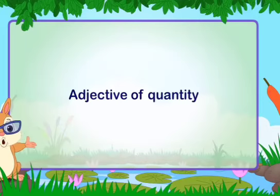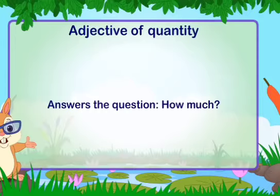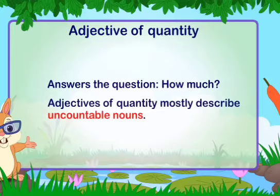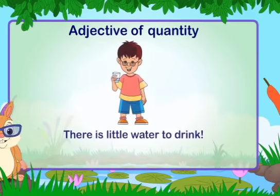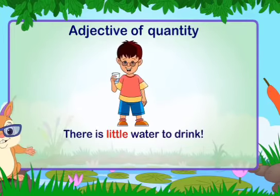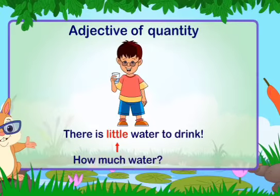Adjective of quantity: an adjective of quantity answers the question 'how much?' Adjectives of quantity mostly describe uncountable nouns. For example, 'there is little water to drink' — little answers the question 'how much water?'